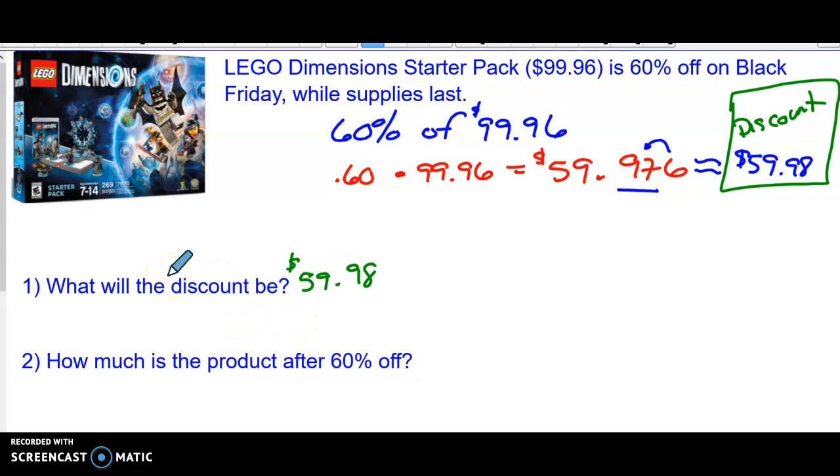So your discount is $59.98. Now, the discount is what you're actually subtracting away from the 99.96. So you're going to have to take the $99.96 and subtract your discount, which is $59.98. So we're going to subtract it. That's my discount. So I'm going to subtract. Got to borrow. Make that 8. 16 minus 8 is 8.